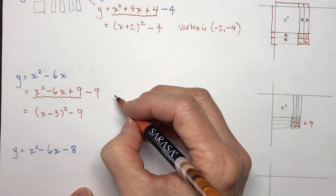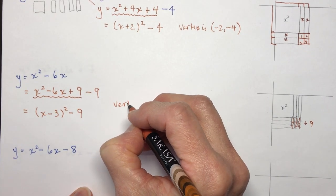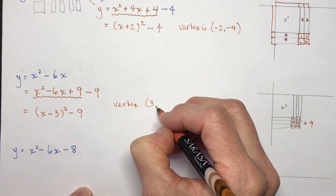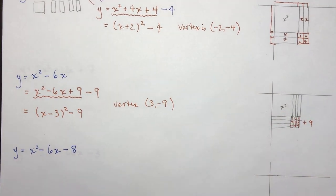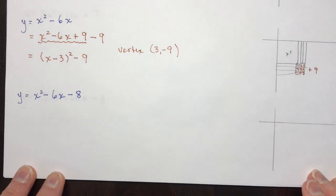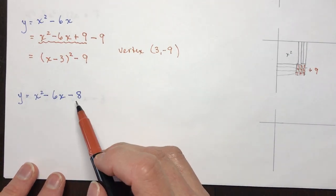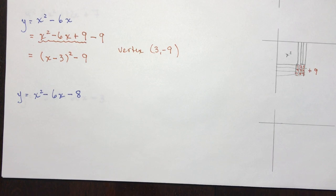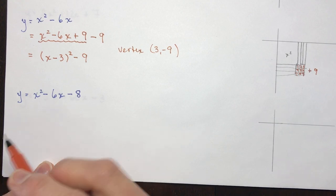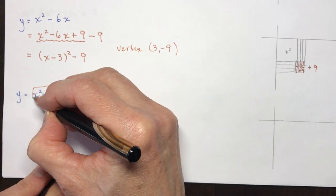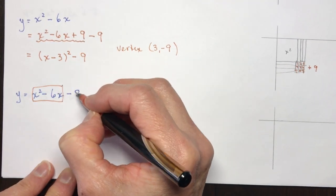The vertex is 3 and minus 9. Vertex: 3, minus 9 — and that's the whole reason we're completing the square, to find that vertex value. Now we're going to do one where we have another number in it — we have a minus 8. I was telling my class that anything past the x term is not invited to the party; these are the two we want to use to make the perfect square.